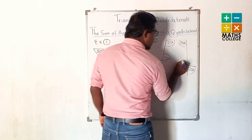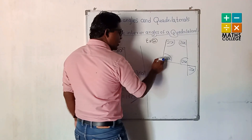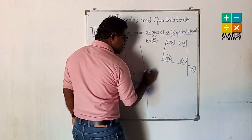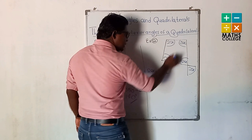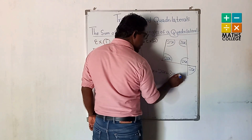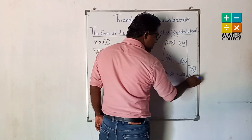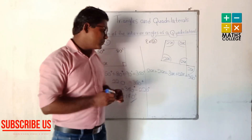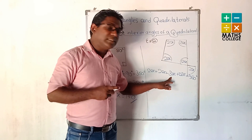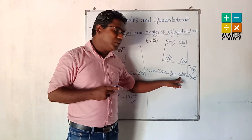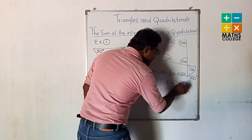So we can write: 2x + 2x + 3x + 2x = 360. Combining: 2x + 2x = 4x, then 4x + 3x = 7x, then 7x + 2x = 9x. So 9x = 360.